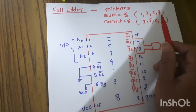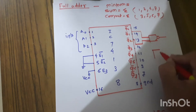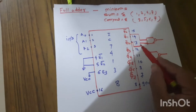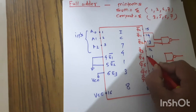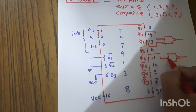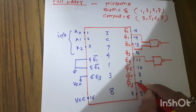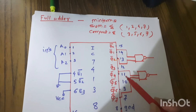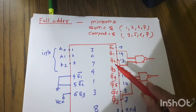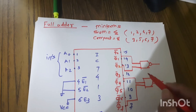Now take a second NAND gate for min terms 4 and 7. Min term 4 is Q4, which is pin number 11 — connect it to the first input. Min term 7 is Q7, which is pin number 7 — connect it to the second NAND gate. So Q1, Q2 are connected to NAND gate 1, and Q4, Q7 are connected to NAND gate 2.